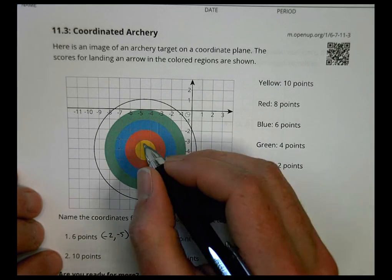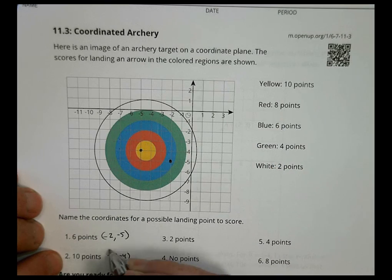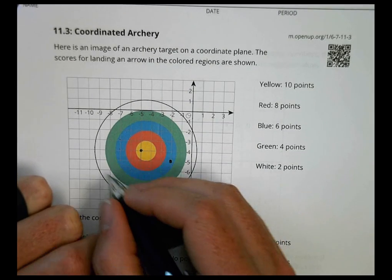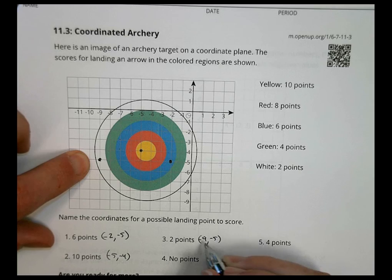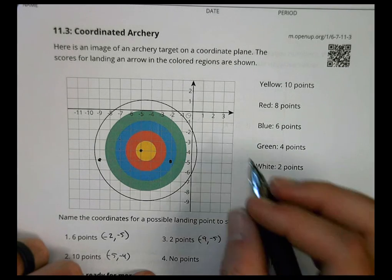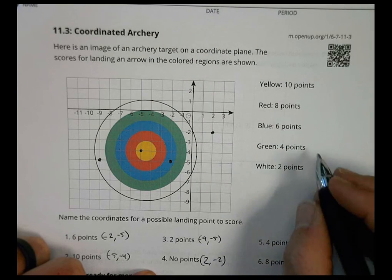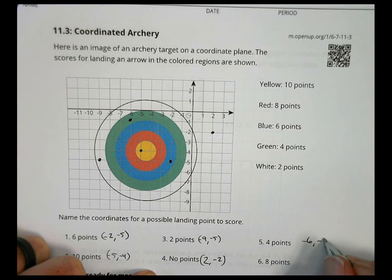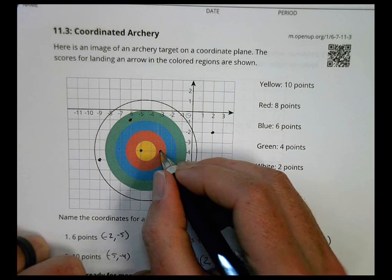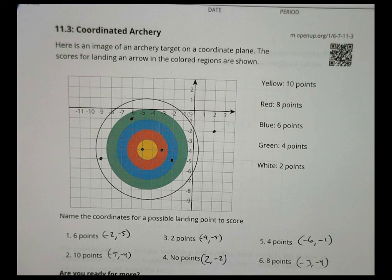How about 10 points? Well, 10 points is going to be in the middle, so 10 points in the yellow. There's one at negative 5, negative 4. Which one gets two points? That's in the white. So find a place in the white that you like, put it there, or negative 9, negative 5. Again, there are other options. These are just some. No points could be anywhere. I could pick a point right there where I missed it completely at 2, negative 2. 4 points is green, so I could put a green spot there, maybe go right there, negative 6, negative 1. And 8 points is the red one. We could put one here, negative 3, negative 4.